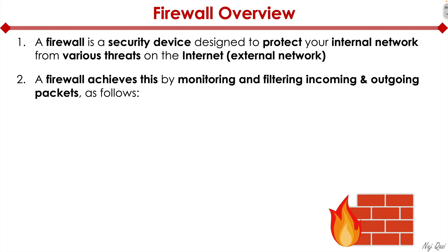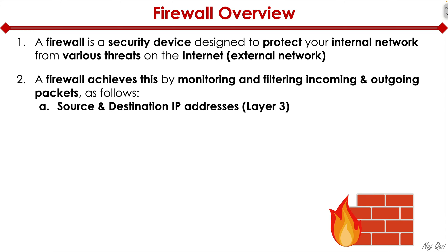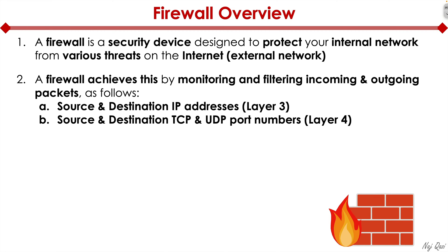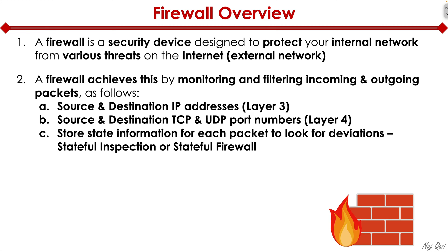Understand that a firewall is a packet filter — it filters packets as they're either coming in or going out of the network. What information does a firewall actually look at and filter on? It looks at a combination of source IP and destination IP at layer three, and source port and destination port, whether TCP or UDP, at layer four. It also stores state information for each packet to look for deviations — this is known as stateful inspection or a stateful firewall.